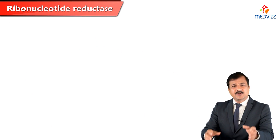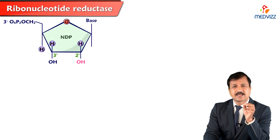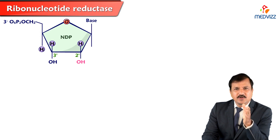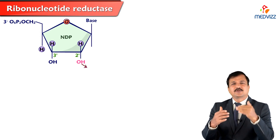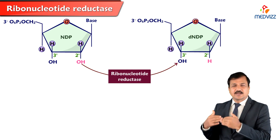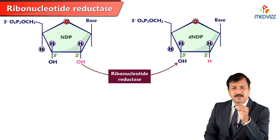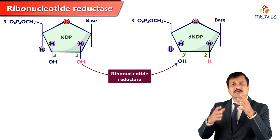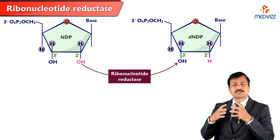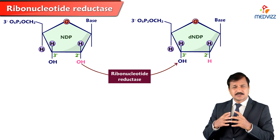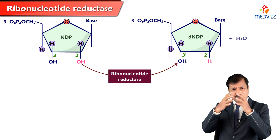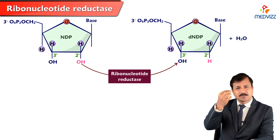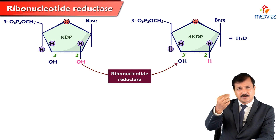This enzyme reduces the second carbon present in ribose in nucleotide diphosphates, converting them into deoxyribonucleotide diphosphates. The second carbon in the ribosugar is reduced — meaning the hydroxyl group is removed. As you can see in the reaction, a water molecule leaves the reaction because the hydroxyl group at the C2 prime carbon is removed.